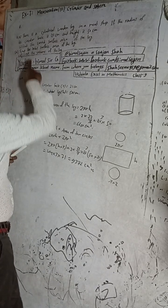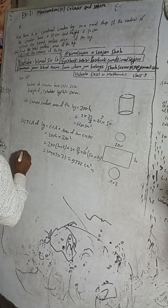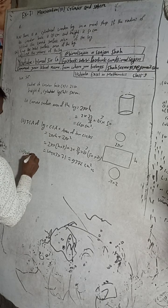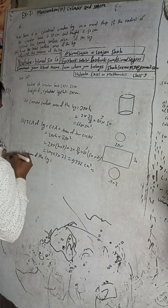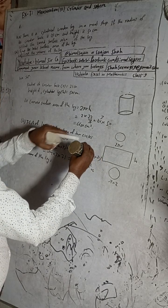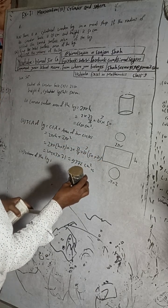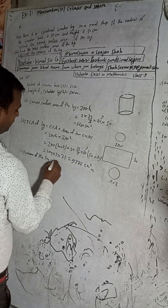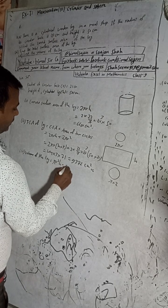Number three: find the volume of the log. Volume of the cylinder: the base surface area into height is called volume. So volume = πr²h, where π = 22/7.